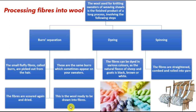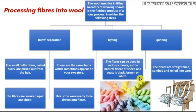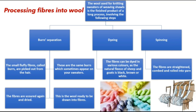Then the wool is ready to be drawn into fibers. But before that, the wool is dyed — fibers can be dyed into various colors because the natural fleece of sheep is just black, brown, or white. After dyeing, pinning happens: the fibers are straightened, combed, and rolled into yarn.